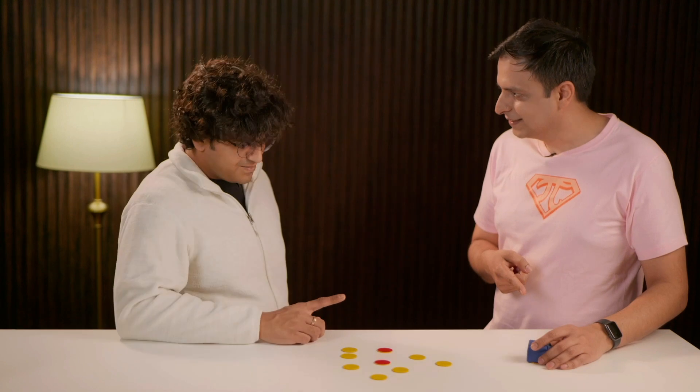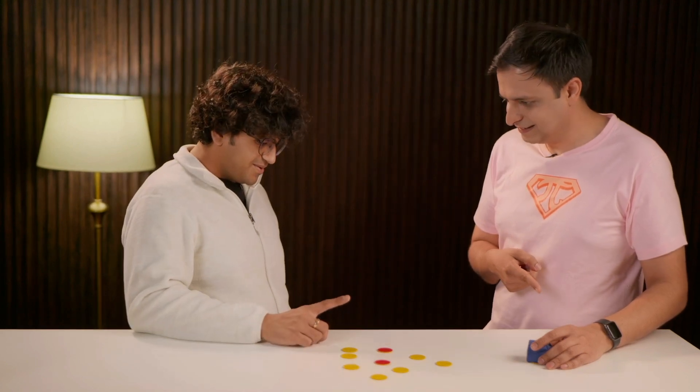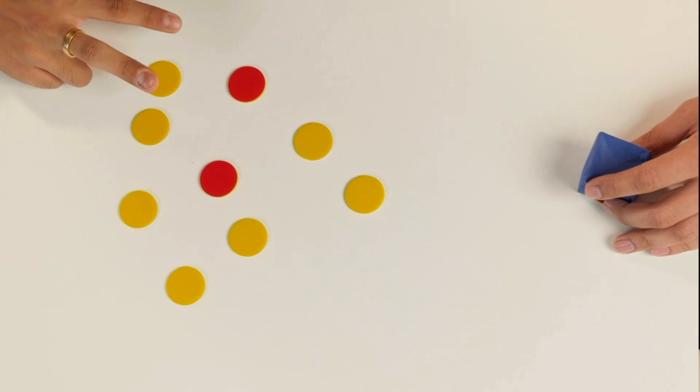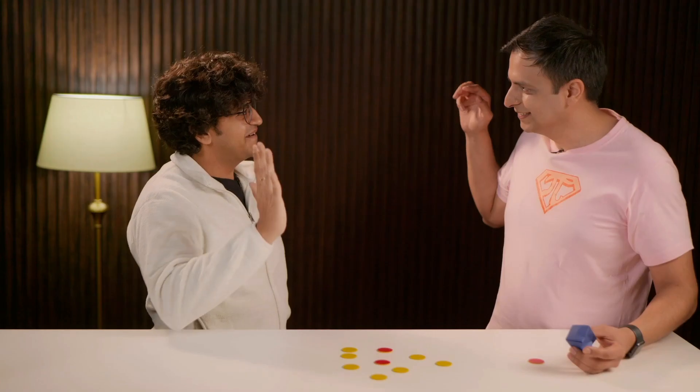What is this coin? We started with an odd number of red coins. Yeah. And now we have two red coins right now. So that is a red coin. Yes.